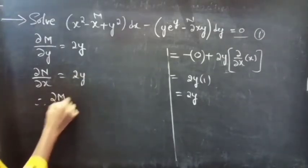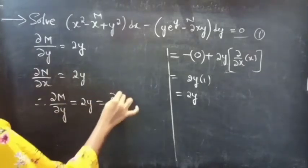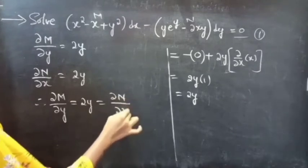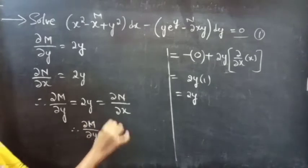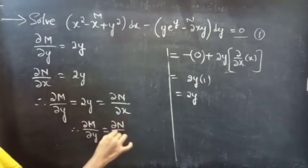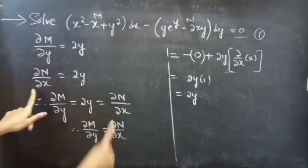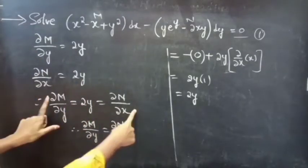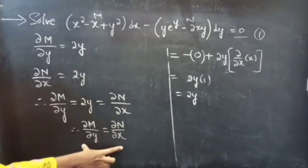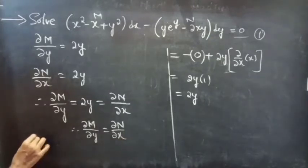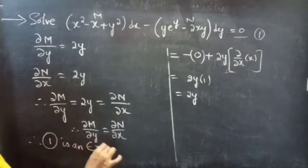Therefore ∂M/∂y equals 2y equals ∂N/∂x. Since ∂M/∂y equals ∂N/∂x, we can say that the given differential equation is an exact equation.